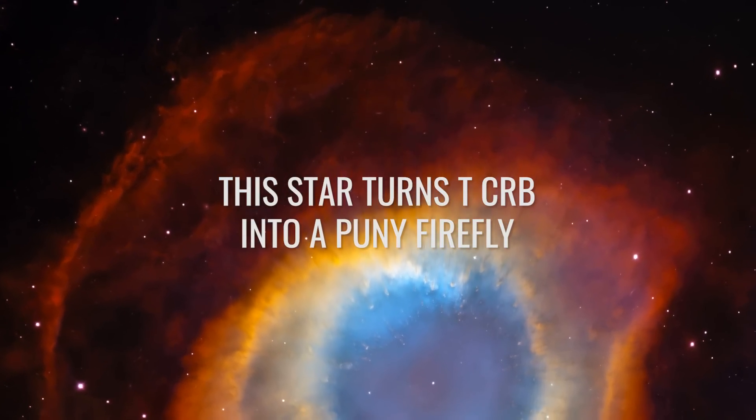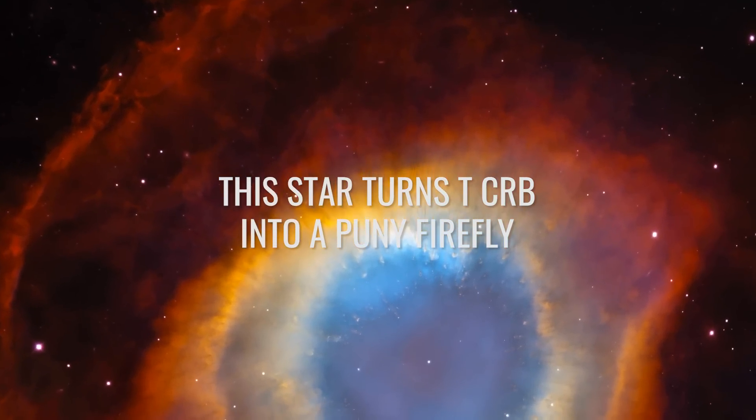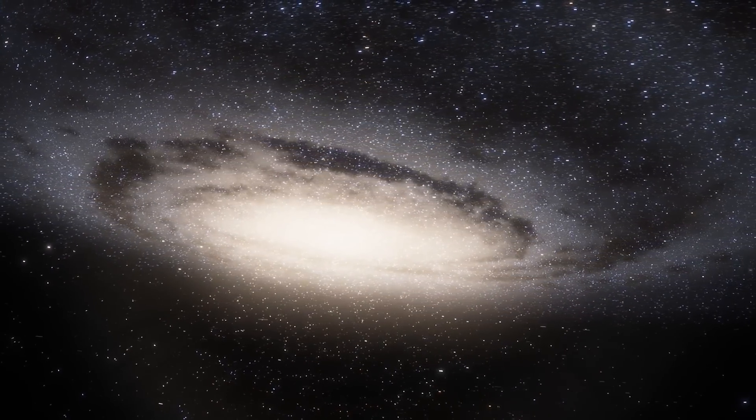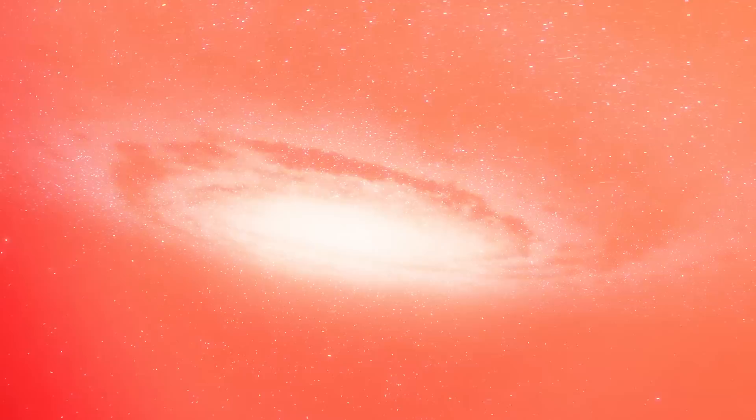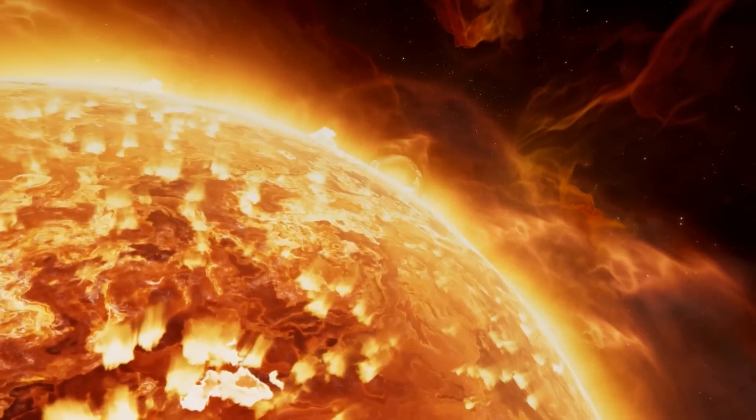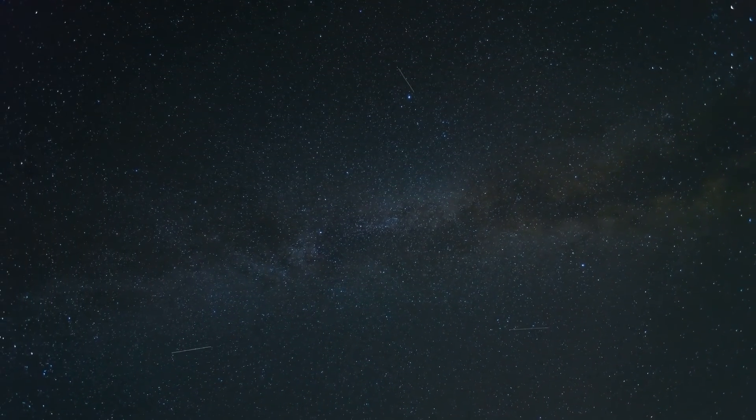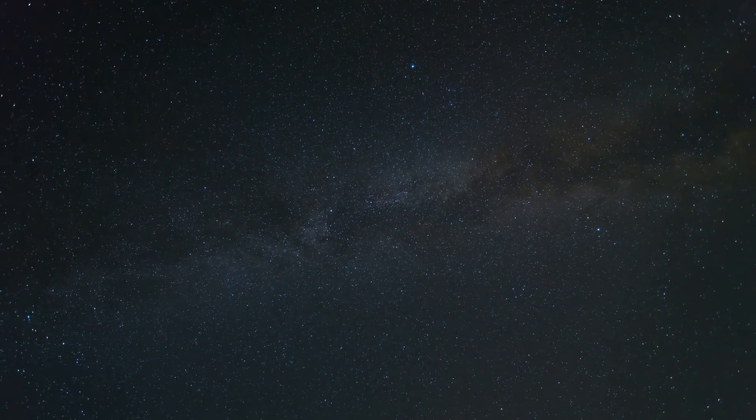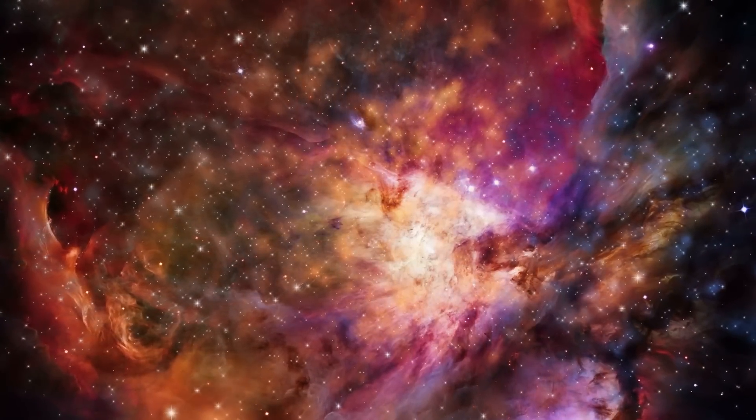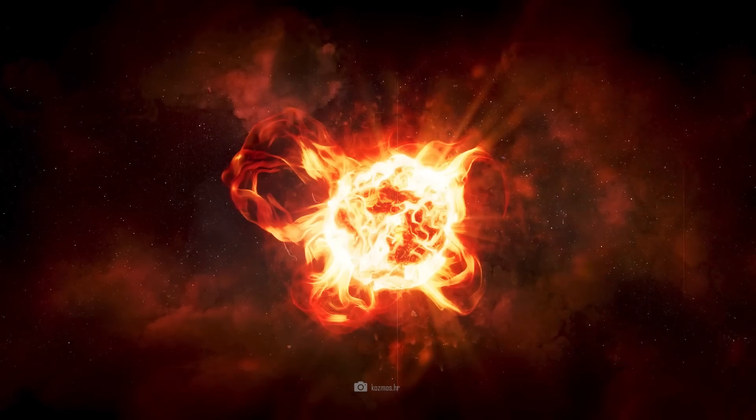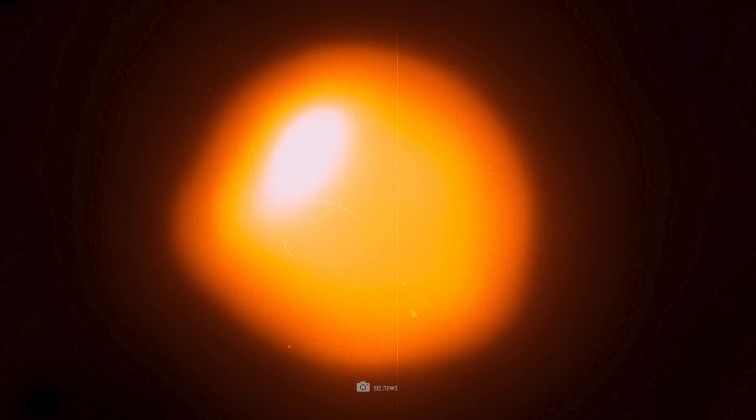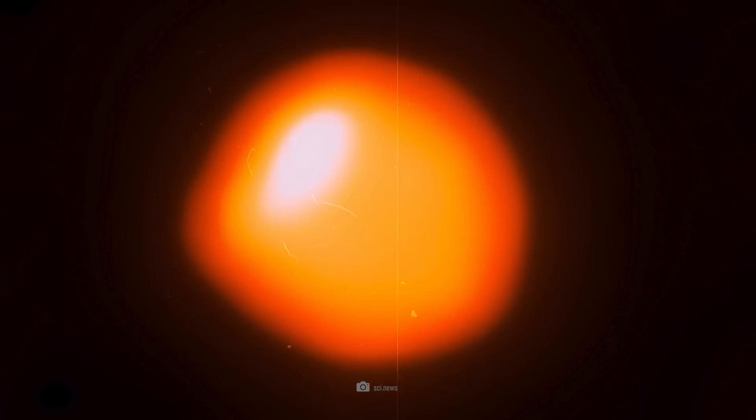This star turns T CRB into a puny firefly. The bottom line is that the universal rule seems to apply in the cosmos: you can always go bigger. In our everyday perception, the sun often embodies the cosmic ultimate. And in relation to our home system, this is true. But the further we delve into the gigantic expanses of space, the more our mighty host star blurs into an insignificant pinhead. If we place the gigantic source of heat and life next to the star Betelgeuse, for example, our central star has to admit defeat in all astronomical respects.